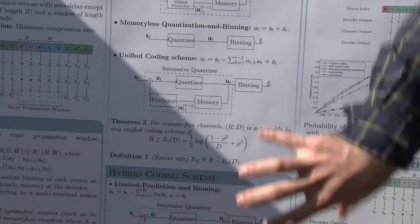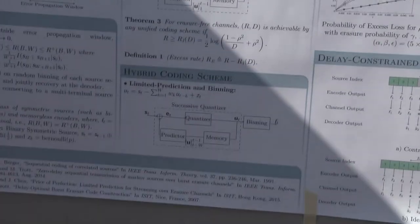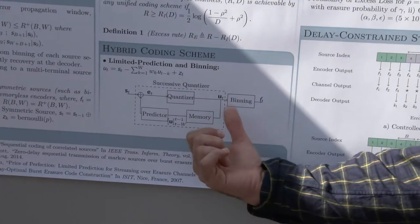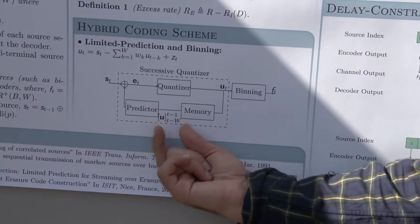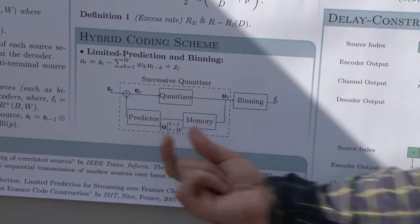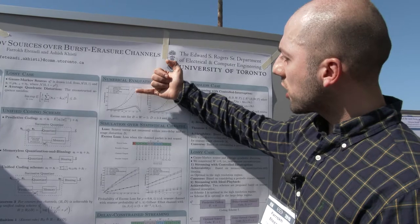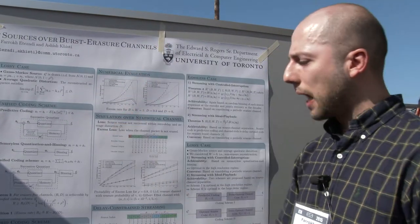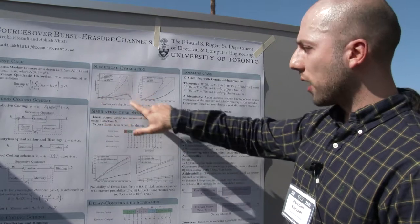What we are proposing here is using this unified coding scheme for the problem that we have by introducing this limited prediction approach and binning. This is the unified coding scheme, except that the output of the quantizer that is fed back to the prediction is only the limited number of past recent quantization outputs, and also we have extra binning here. What we can show is that for this setup, the rate recovery function can be improved upon the predictive coding and memoryless quantizer with binning. And in fact, we establish a lower bound for the rate recovery function and we show that the lower bound is not that far from the rate that we are achieving from the hybrid coding scheme.